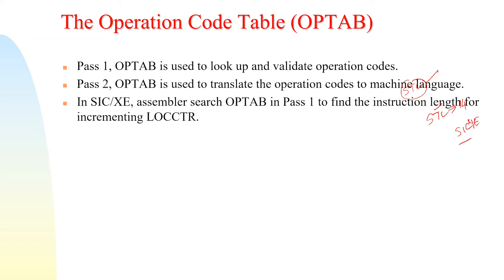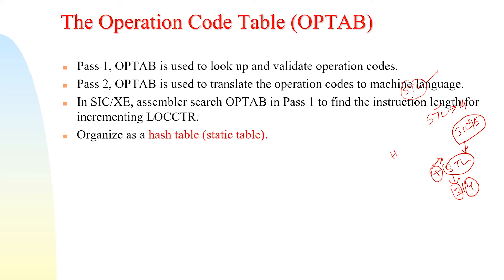In SIC-XE, the OPTAB is also used during pass 1 to find the instruction length for incrementing the location counter. For example, STL can be format 3 or format 4. If there is a plus symbol before the instruction, it is format 4; if there is no plus symbol, it is format 3. The operation code table is organized as a hash table and it is a static table, because it is defined by the machine architecture and you cannot add or delete data from it.